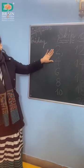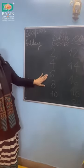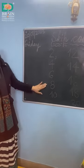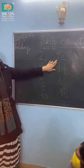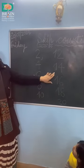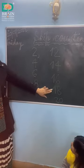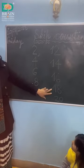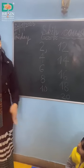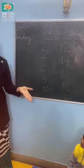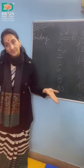2, 4, 6, 8, 10, 12, 14, 16, 18, 20. This is a table of 2. Table of 2.